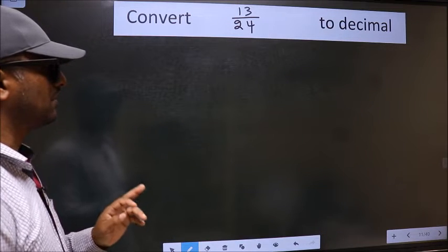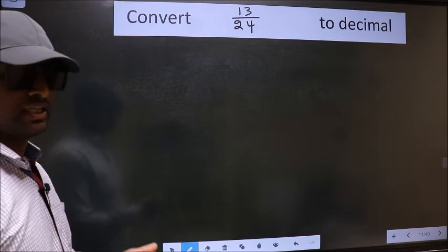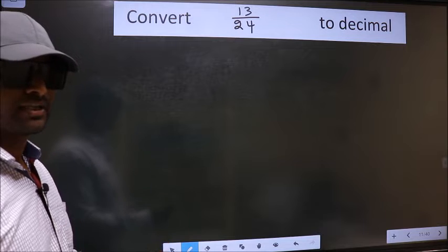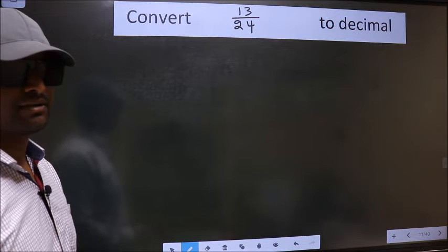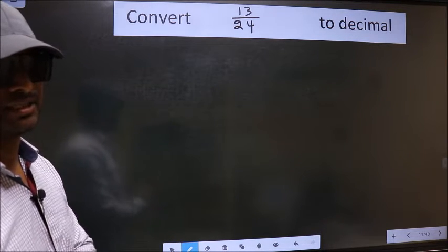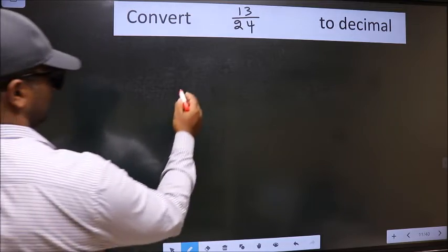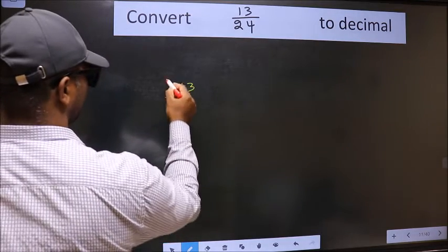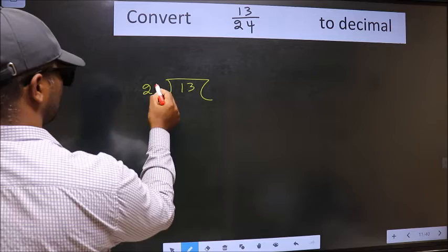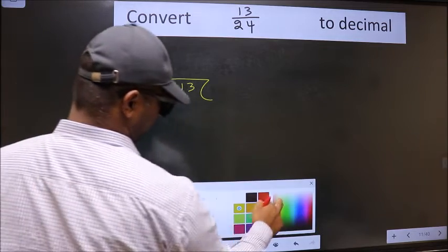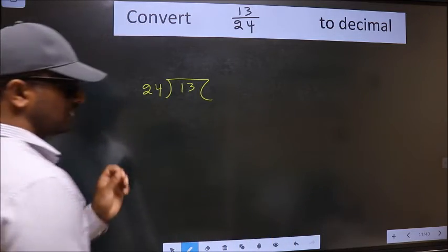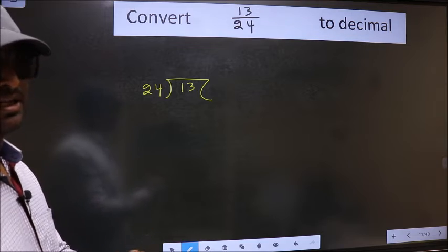Convert 13 by 24 to decimal. To convert to decimal we have to divide, and to divide we should frame it in this way: 13 here and 24 here. This is your step 1.